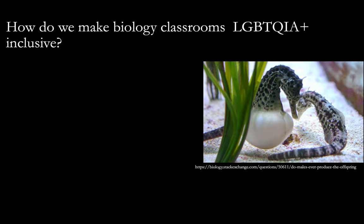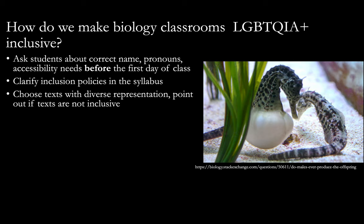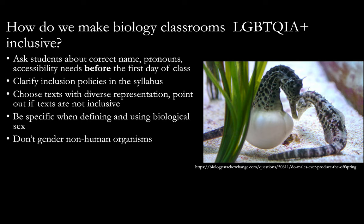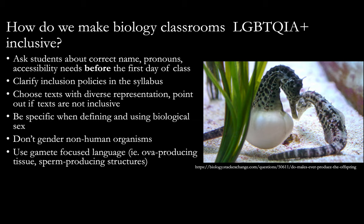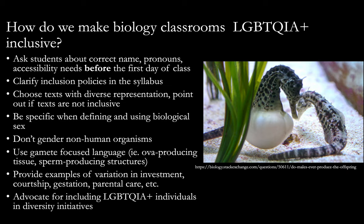I'd like to end with a few general suggestions for inclusion: ask students about correct name, pronouns, and accessibility needs before the first day of class; clarify inclusion policies in the syllabus; choose texts with diverse representation and feel free to point out when texts are not inclusive; be specific when defining biological sex and gender rather than relying on assumptions; avoid gendering non-human organisms; use gamete-focused language rather than gendered language, such as 'ovum-producing tissue' and 'sperm-producing structures'; provide a variety of examples; and advocate for LGBTQIA plus individuals to be included in diversity initiatives. Thank you for listening — please feel free to contact me through email or follow me on Twitter.